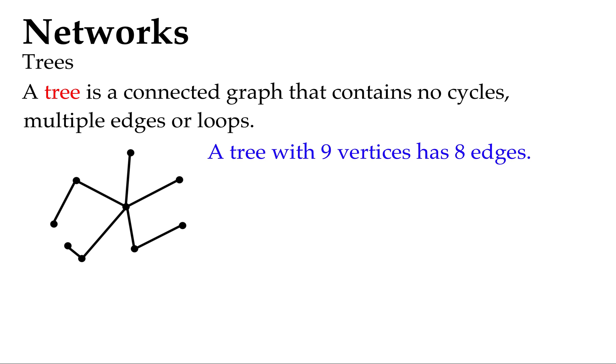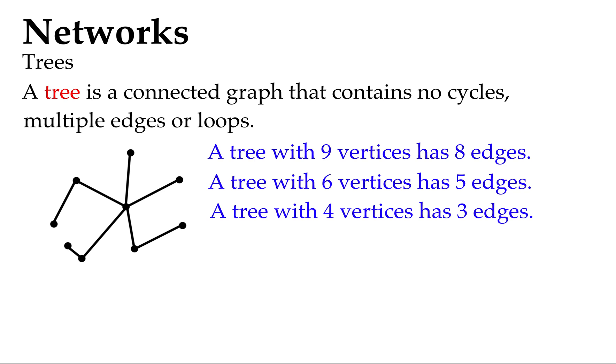Now you'll notice a bit of a pattern here. A tree which has 9 vertices has 8 edges. A tree with 6 vertices has 5 edges. I think you can spot a pattern here. A tree with 4 vertices has 3 edges. So we could say that in algebra type language, a tree with n number of vertices has 1 less than that number of edges each time. So we can expect that if we're counting the vertices and edges of a tree.